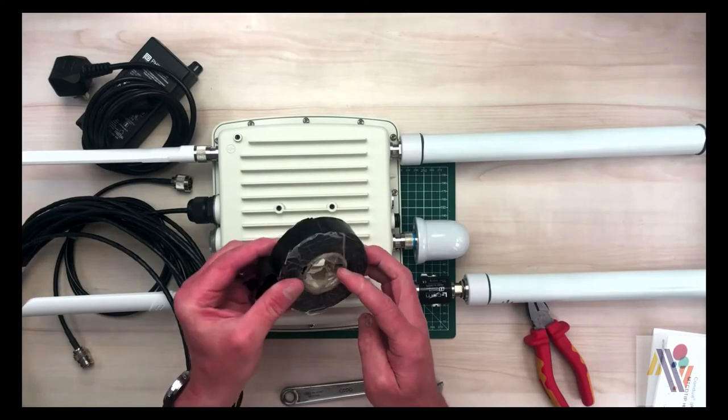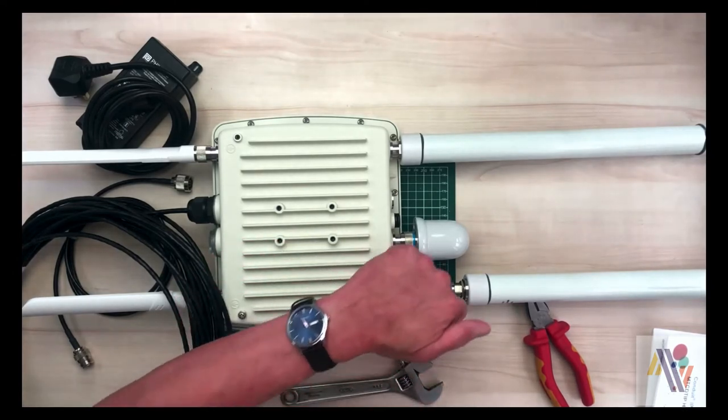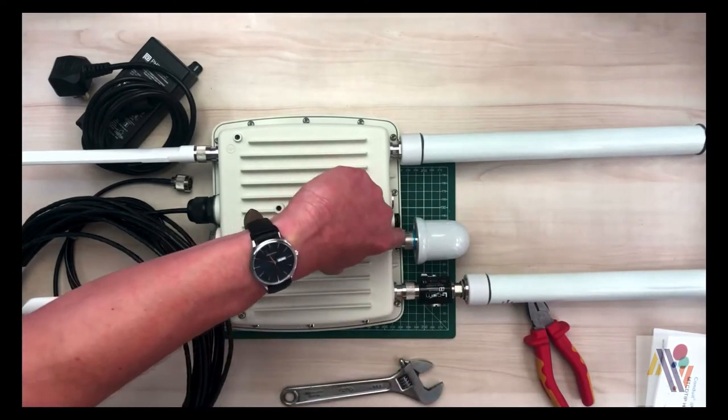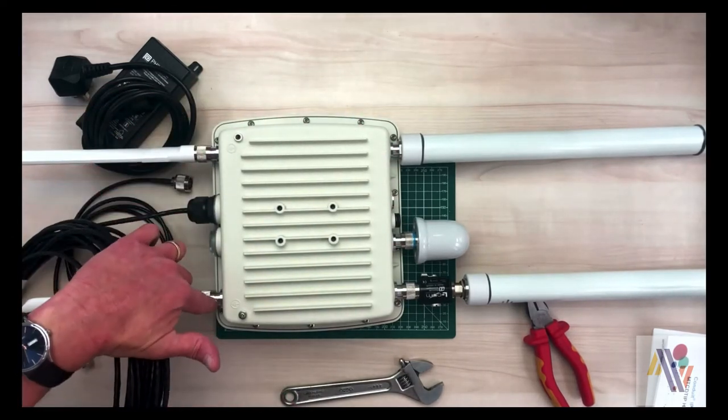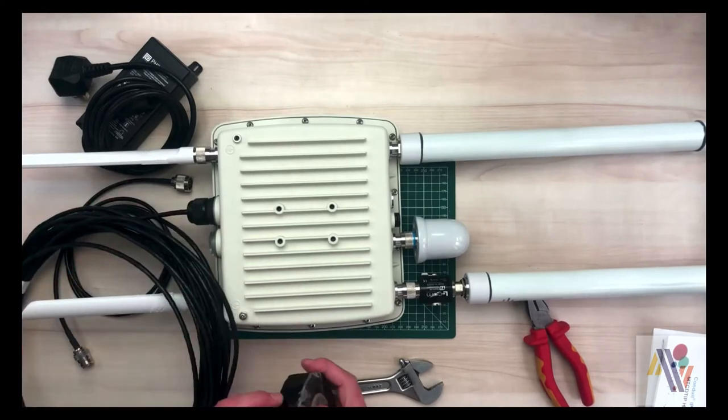We're now going to seal all of these joints with self-amalgamating tape. Here, here, here. On the 4G connectors here and here. And of course the network connector here. If you've not used this tape before it essentially sticks to itself. I'll give you a short demonstration.